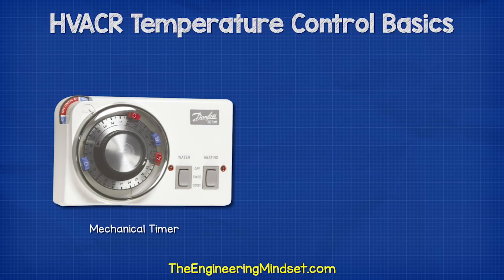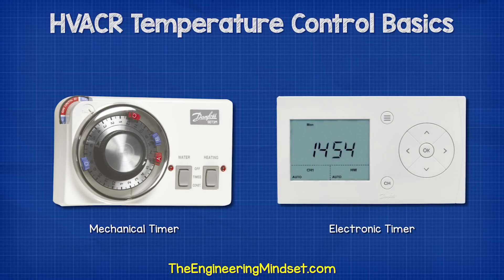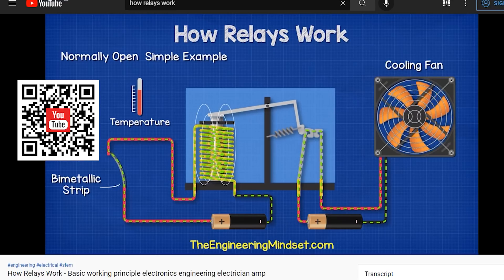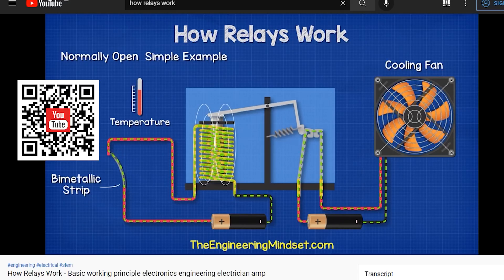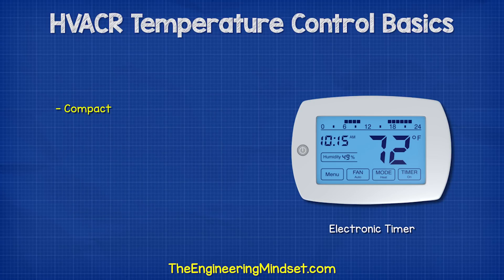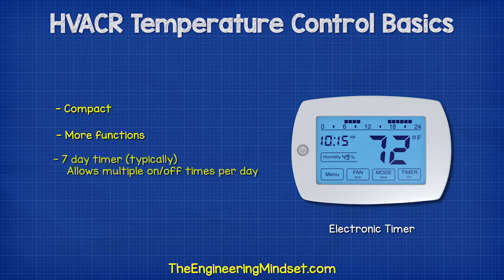Timers used to all be mechanical. However, these days timers are usually electronic and typically use relays to open and close circuits. Electronic controllers are compact and much easier to use. They have far more functions, but usually at least a seven-day time schedule with multiple on-off times per day.